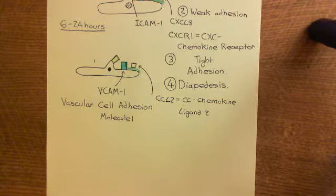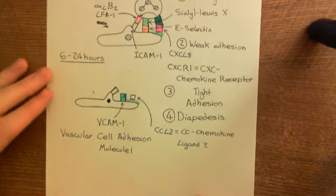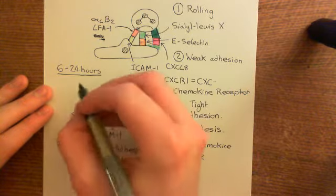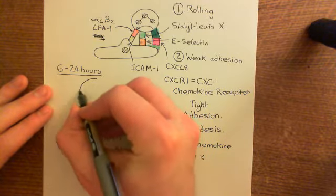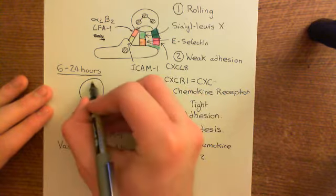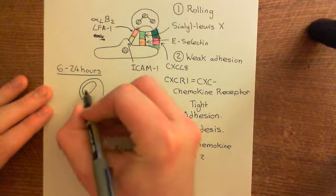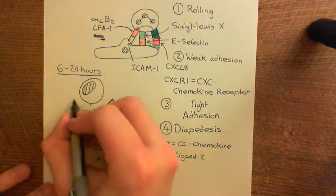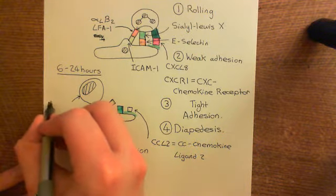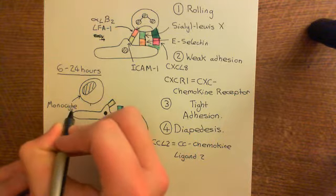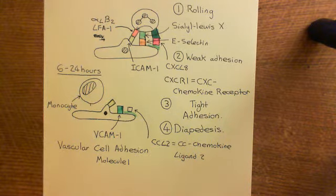You're going to get the rolling of monocytes over the endothelial cells. Monocytes are the precursors to macrophages — you don't have macrophages circulating within the bloodstream. Instead, you have monocytes, and when monocytes go into the peripheral tissue, they differentiate into macrophages, which then phagocytose invading pathogens.